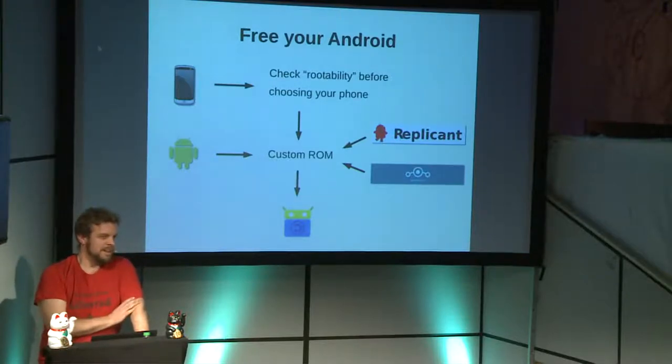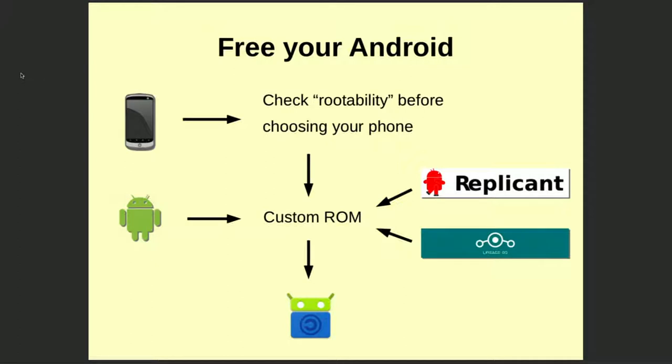The solution — and it's actually a very complex and technical topic — but in short, you can root your phone, and after rooting you can install an alternative operating system. These are called custom ROMs. Because the Android system is free software, there are forks out there that remove the Google apps and republish it, as you'd expect with free software.